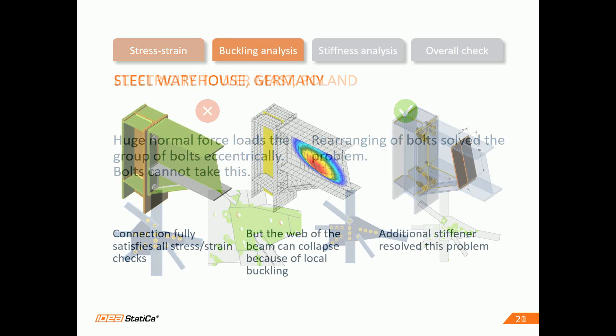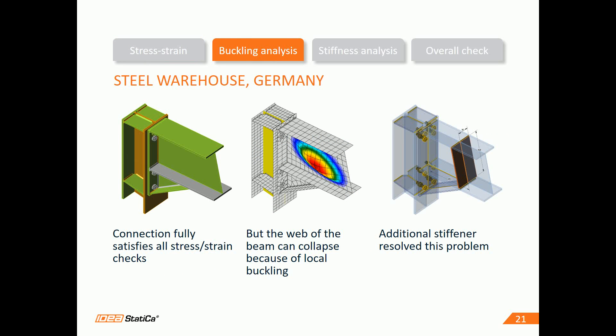The next example is a joint in a steel warehouse. It is okay from a stress-strain point of view, but a proper buckling analysis shows that the web of the beam could easily collapse. We can add a stiffener and recalculate — the design is safe now.